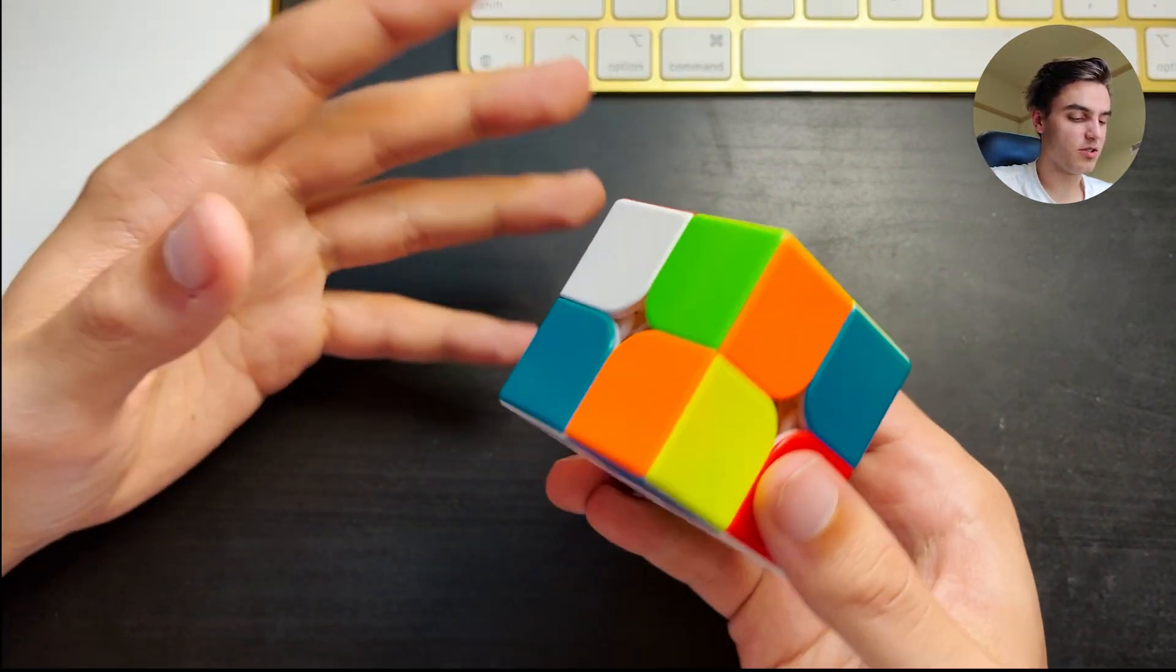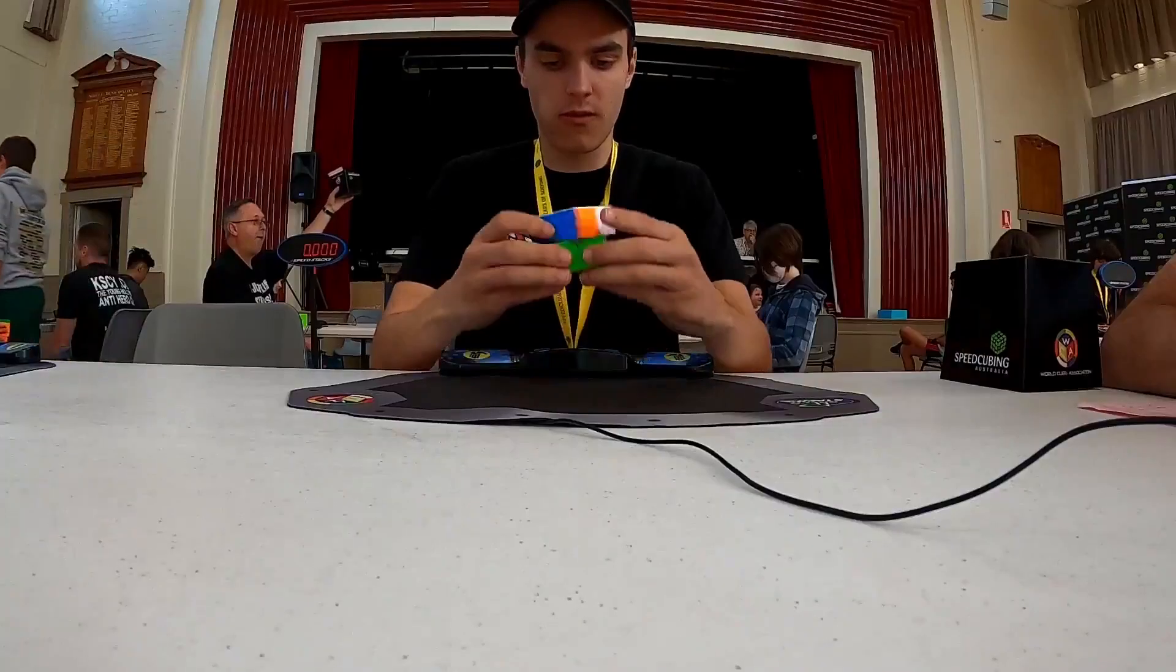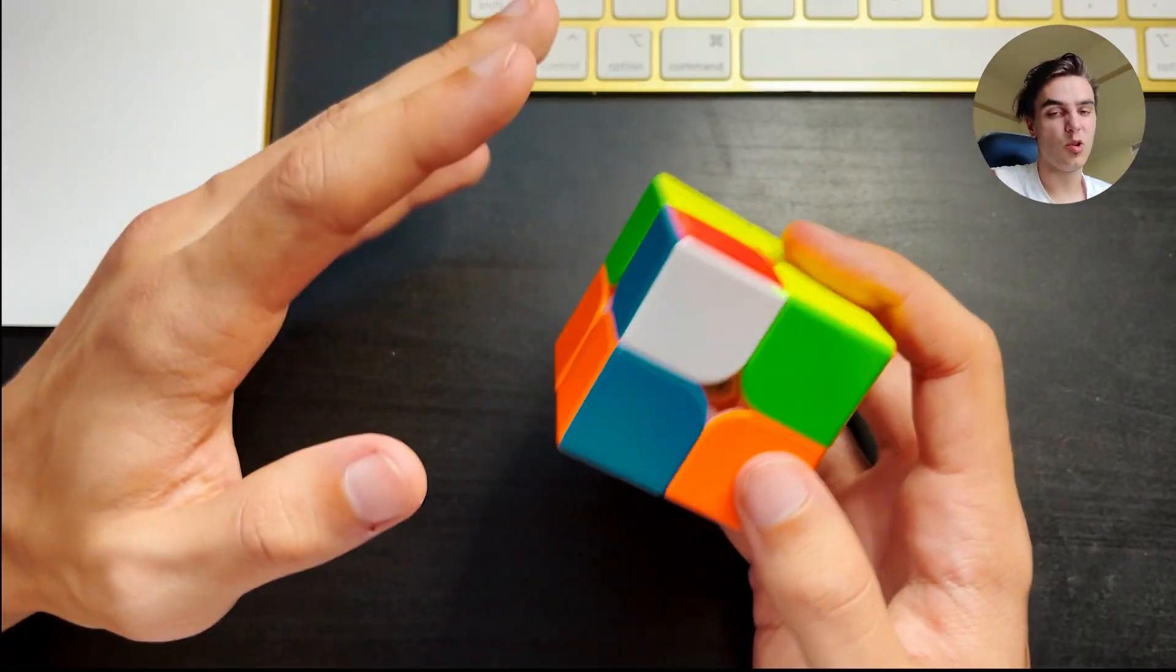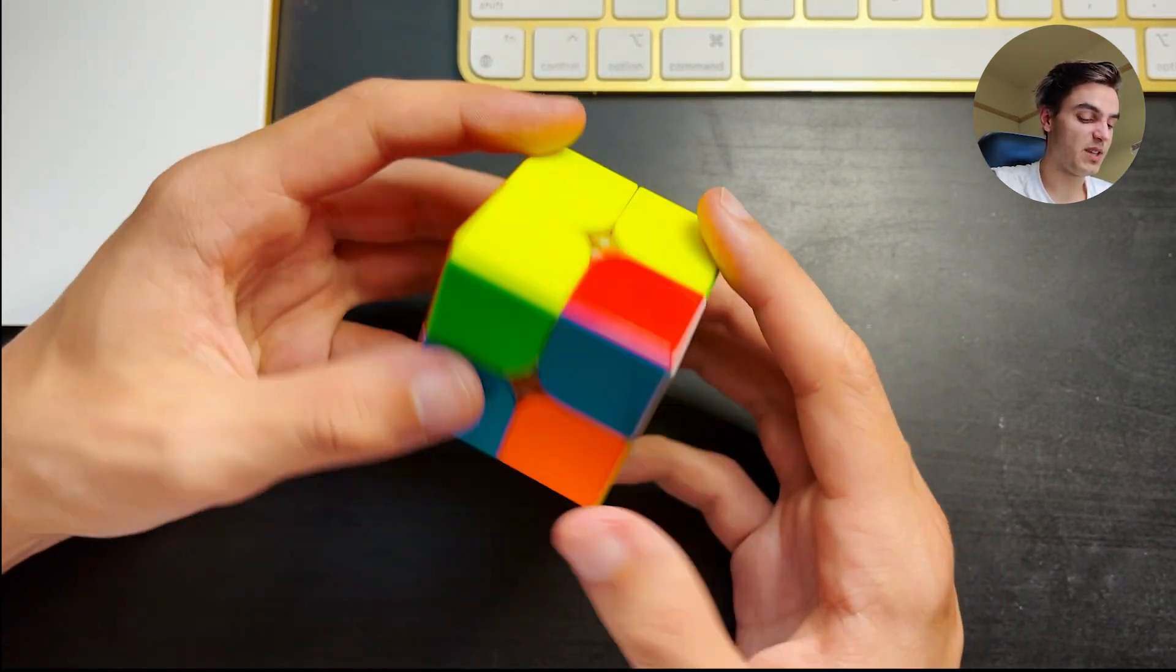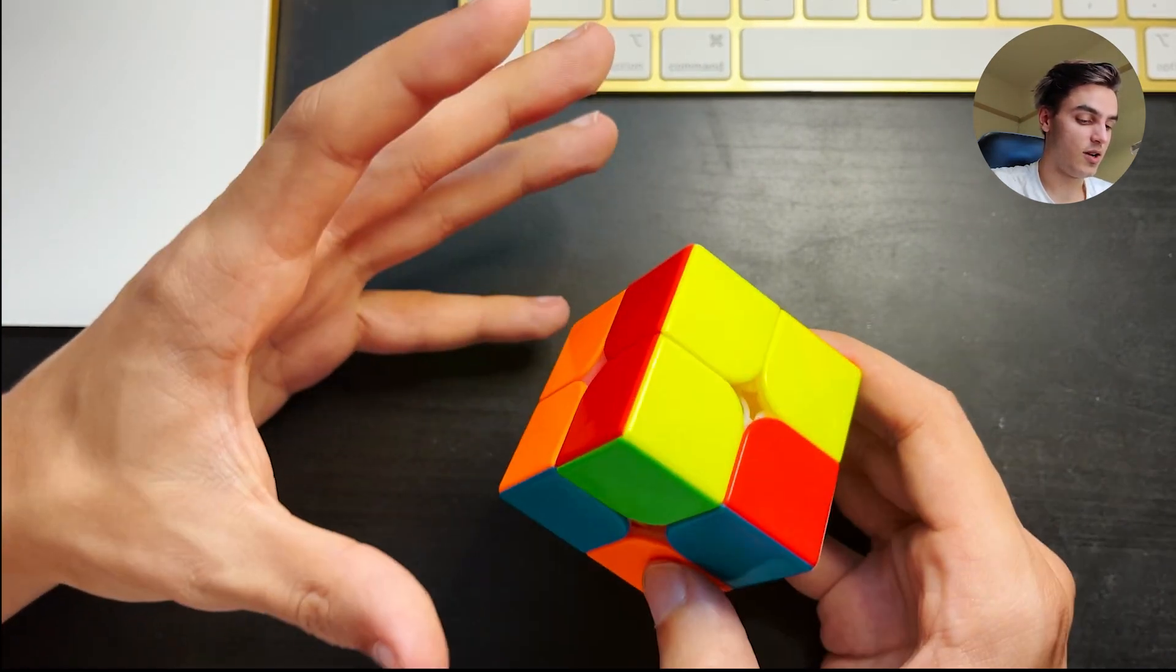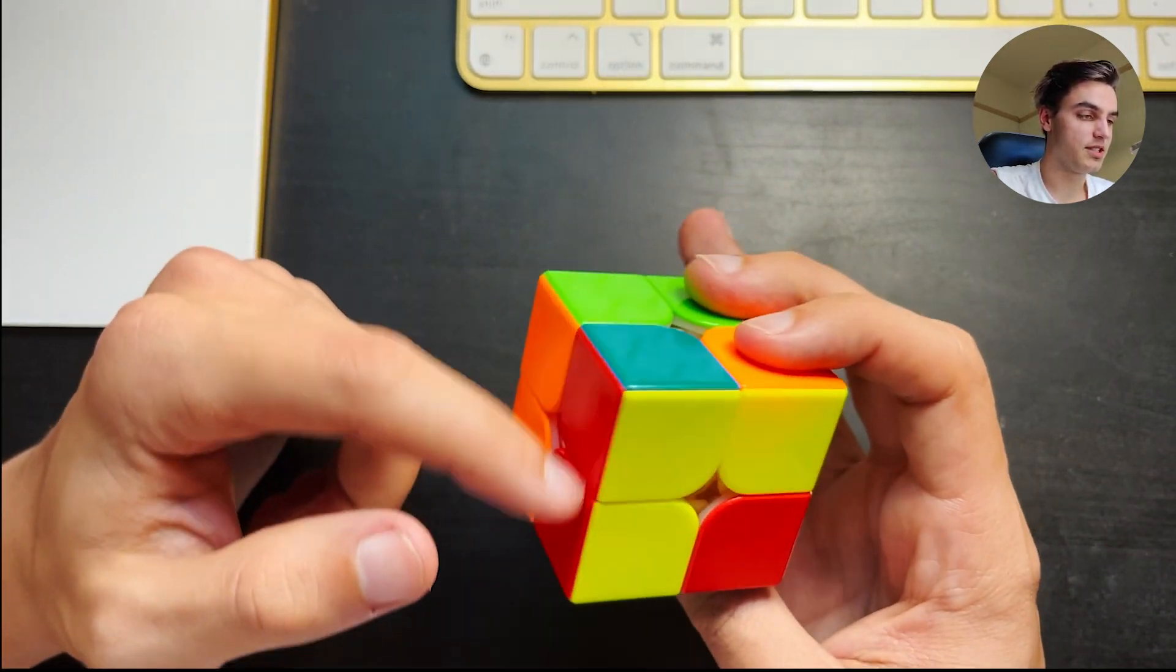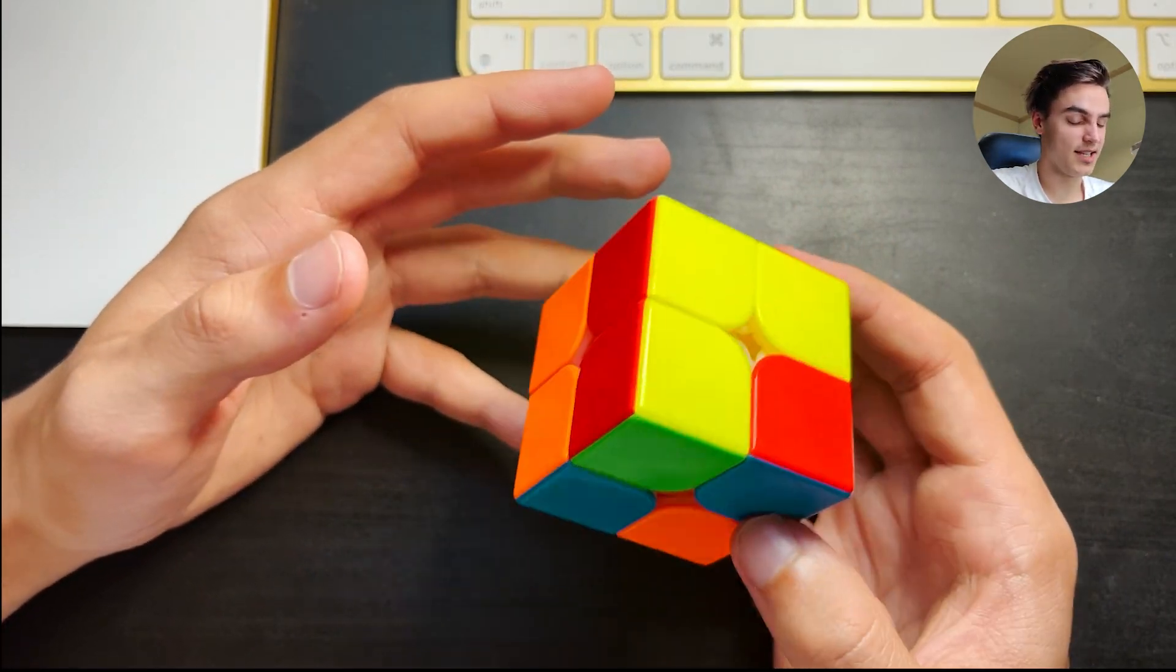So why I wanted to bring this up is because one time in a competition, I got a solve that looked like this. Now, it was not exactly this scramble, but it was a case that was like this, where it was a winter variation, just like this. And I noticed because of this bar, the whole bottom's done because whatever you insert is going to solve the bottom. However, I also noticed this bar was here as well, which meant that I was going to get an entire skip.